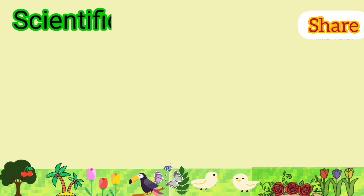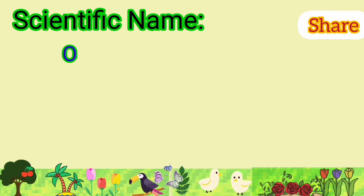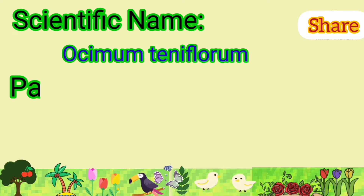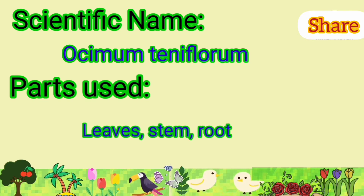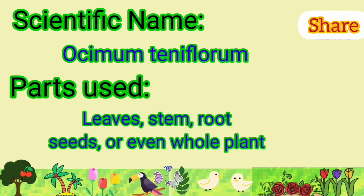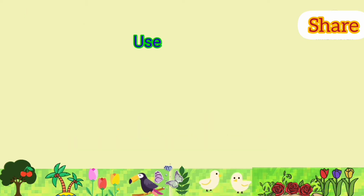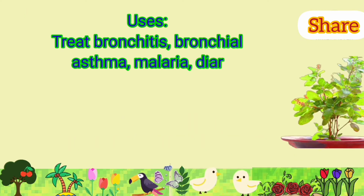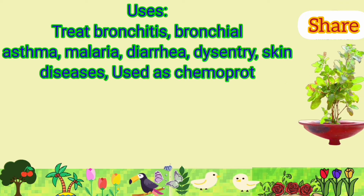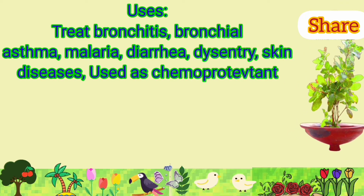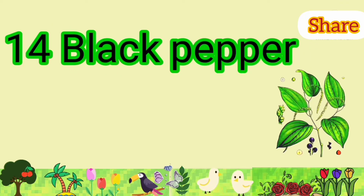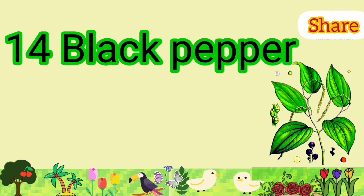Tulsi: its scientific name is Ocimum tenuiflorum. Parts used are leaves, stem, roots, seeds, or even the whole plant. It is used to treat bronchitis, bronchial asthma, malaria, diarrhea, dysentery, and skin disease.